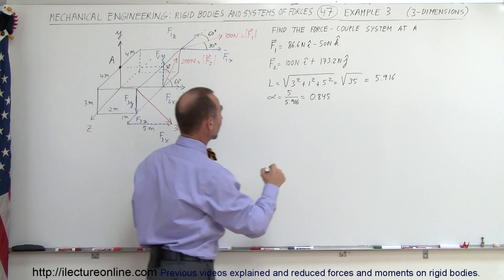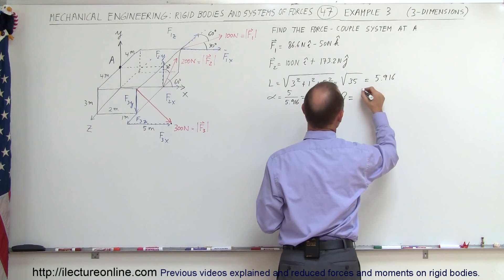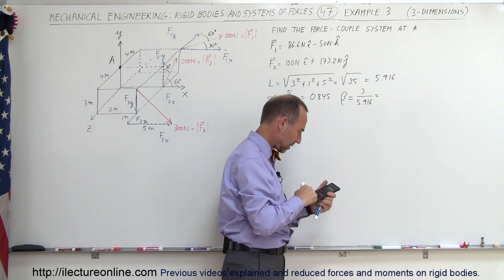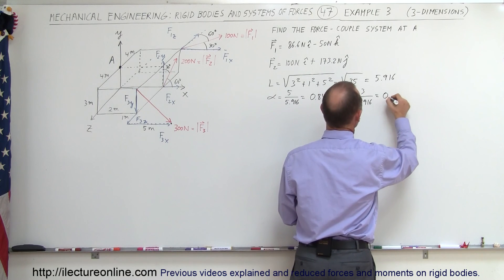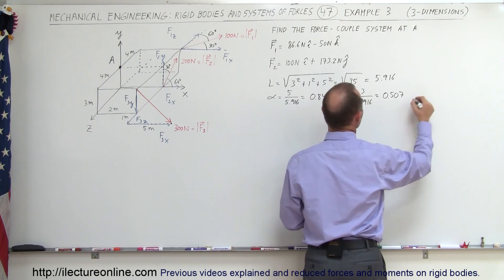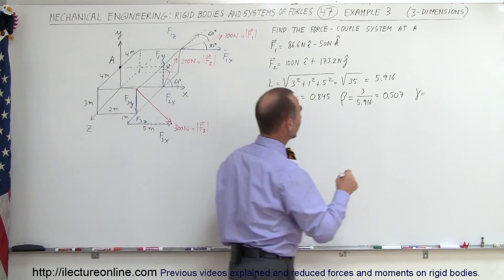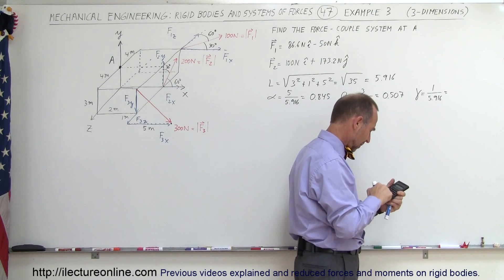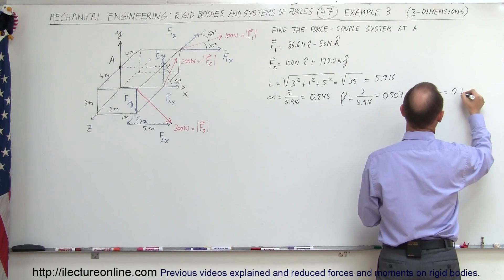The direction cosine for the y direction, beta, equals the y component 3 divided by 5.916, which gives 0.507. And gamma, the direction cosine in the z direction, is the ratio of the length in the z direction divided by the total length 5.916, so 1 divided by 5.916 equals 0.169.